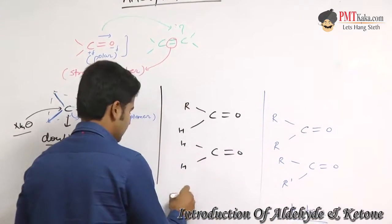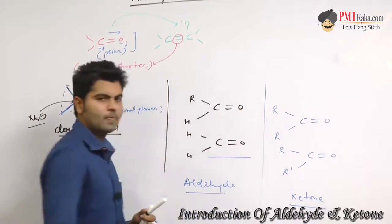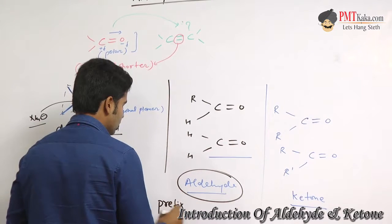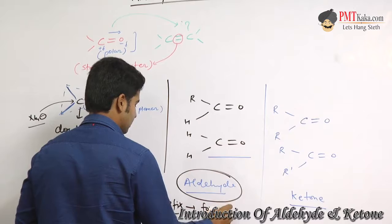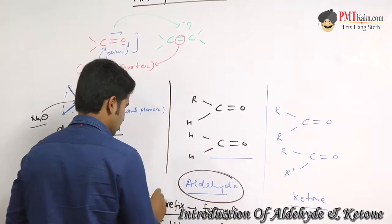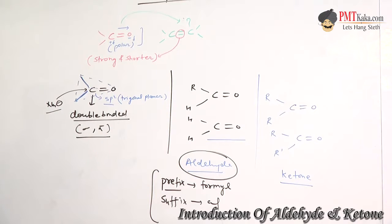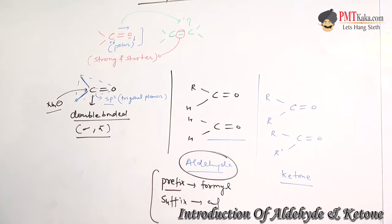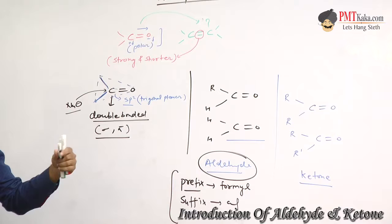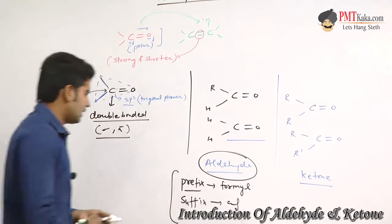This is formaldehyde, the simplest aldehyde. So aldehydes have two cases: prefix and suffix. Prefix is formyl. Suffix is -al. If there is a higher priority group, we use prefix. If aldehyde has higher priority, we use suffix. For example, with aldehydes and ketones, if we have alcohols, suffix is used. If we have carboxylic acid, then prefix is used. The prefix is formyl or oxo, and suffix is -one.